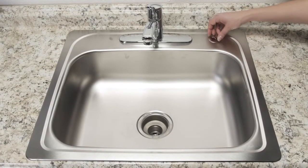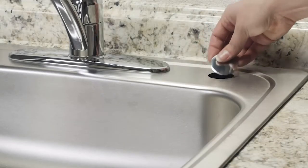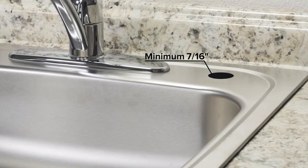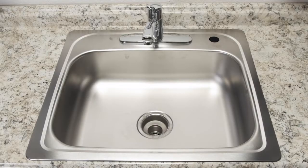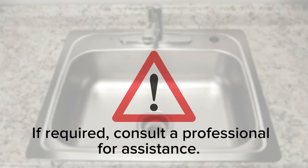You will also need an existing hole at least 7/16 inches in diameter in the sink or countertop to install the supplied filtered water faucet. If drilling a new hole in your sink or countertop is required for installation, please consult a professional.